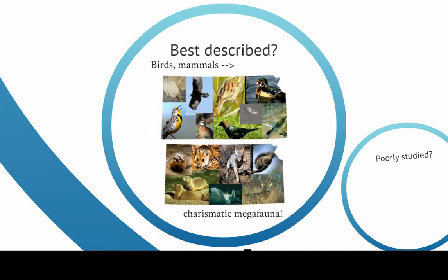The birds and the mammals are probably the best described species, meaning we have scientific names for almost all of them. That's because they're what we call charismatic megafauna. Charismatic means things you're attracted to that are interesting; mega means big, and fauna means animals. So these are the big charismatic animals — imagine things that there are posters and calendars of. We've described those pretty well, but even so, we're still discovering new species of birds and mammals on the planet.